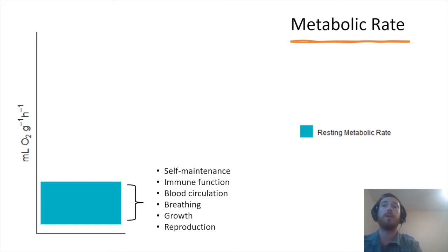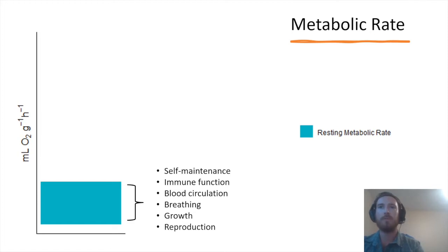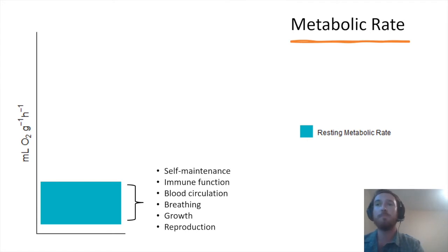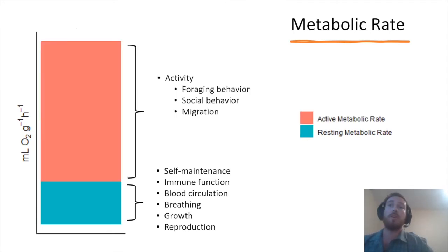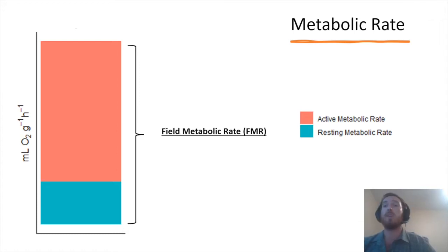Metabolic rate can be broken down into two primary categories: resting metabolic rate and active metabolic rate. Resting metabolic rate reflects the total amount of energy an animal needs to maintain normal body functions such as growth, reproduction, breathing, and blood circulation. Active metabolic rate is the total amount of energy needed for activity and movement, such as migration, foraging, and social behavior. Combined, these two aspects represent field metabolic rate. I primarily focus on resting metabolic rate and am interested in what factors affect a species-specific resting metabolic rate.